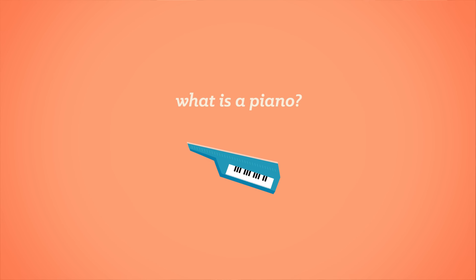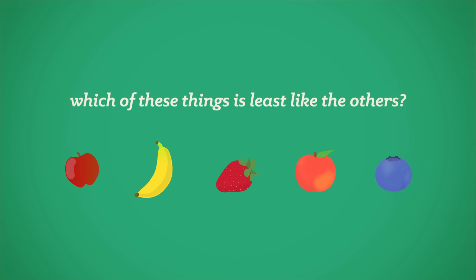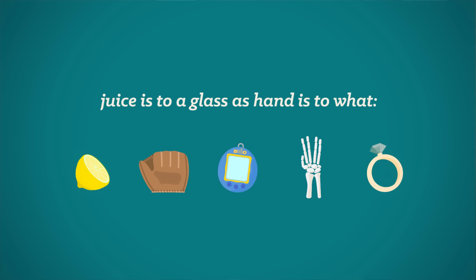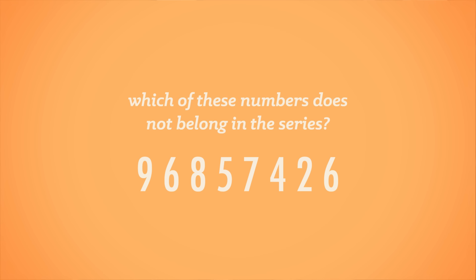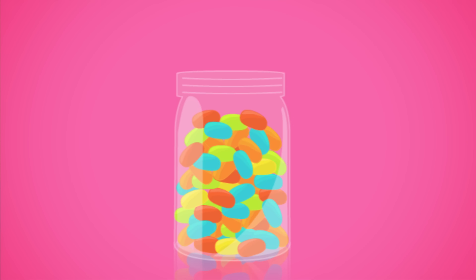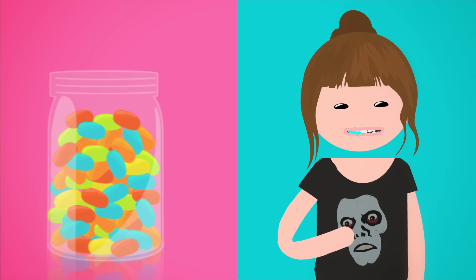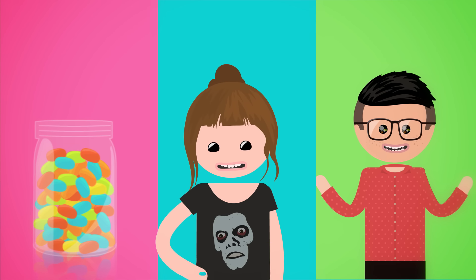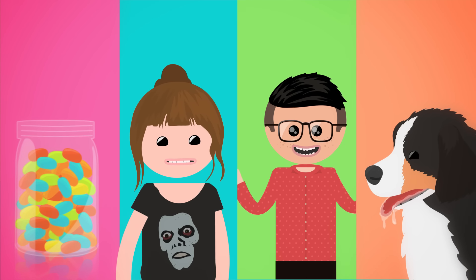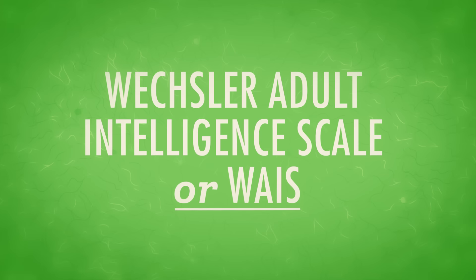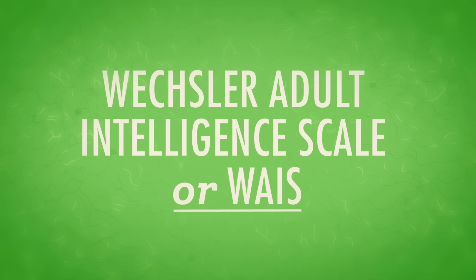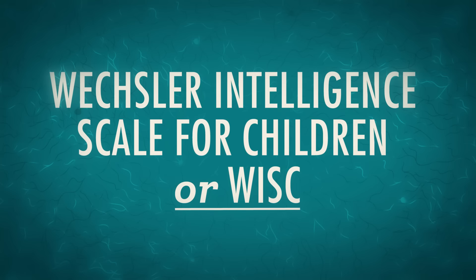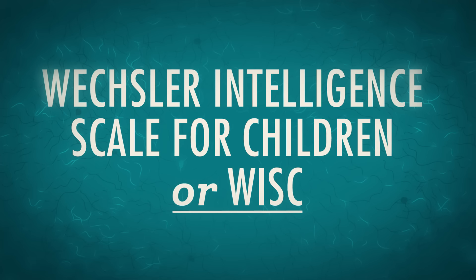What is a piano? Which one of these things is least like the others? Juice is to glass as hand is to what? Which one of these numbers does not belong in the series? Bernice had X number of jelly beans. She ate one, then gave half of what was left to Bruno. Then she ate another, and gave half of the remainder to her dog. Now she only has five beans — how many did she have? These questions are similar to what you'd find on today's most widely used intelligence tests: the Weschler Adult Intelligence Scale, or WAIS, and the Weschler Intelligence Scale for Children, or WISC.